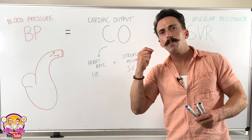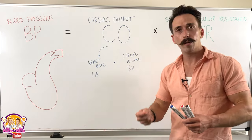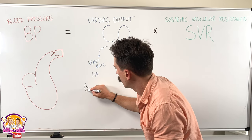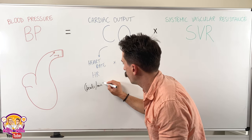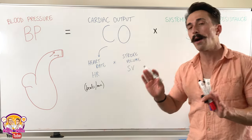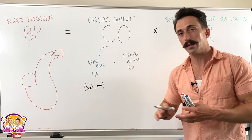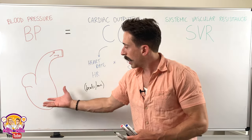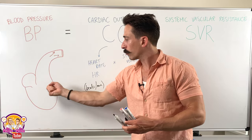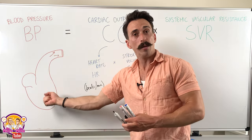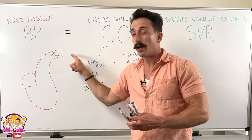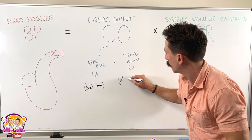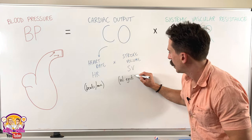Heart rate is how many beats your heart has per minute — beats per minute, that's your heart rate. Stroke volume is how much blood is ejected with every beat. So we've got our left atrium, left ventricle, and aorta that fills up with blood and it beats — blood gets squirted out of the aorta, and it's constantly beating. Every time it beats, how much blood gets squirted out of the left ventricle — that is the volume ejected every beat.